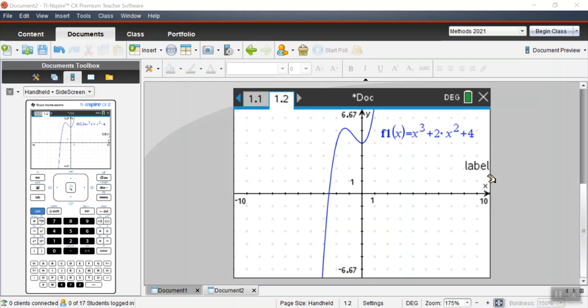So I'm going to show you four calculator shortcuts that are super useful. Are you ready? So we have a graph y equals x cubed plus 2x squared plus 4.